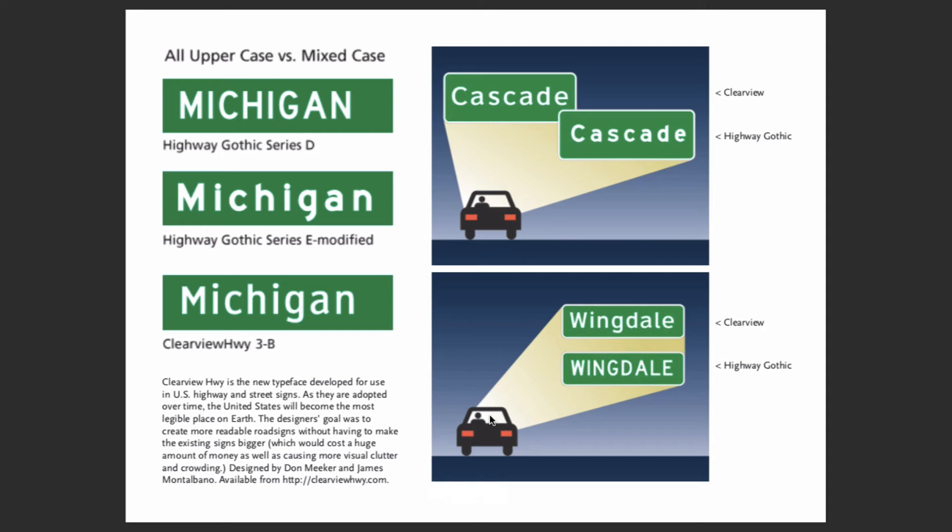One of these typefaces was developed for use with highway signs — starting to think about what happens to type when you're looking at it on paper versus driving versus looking at it on a screen or phone. What happens to typography when you start to move, and what adjustments do you need to make so that it is legible and understood depending on the context of how it's being applied?